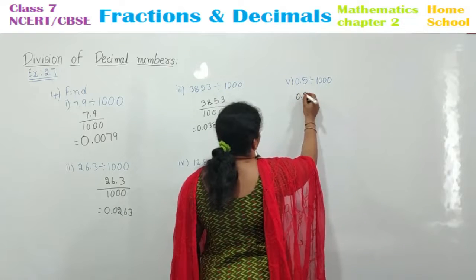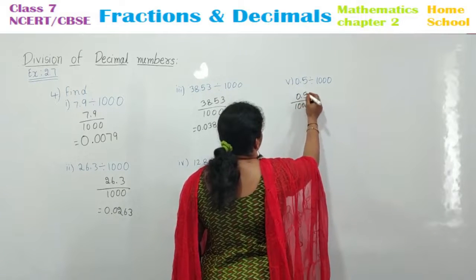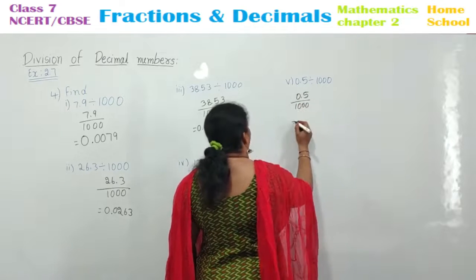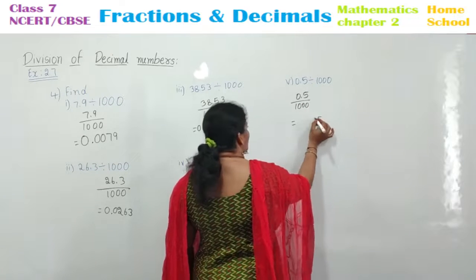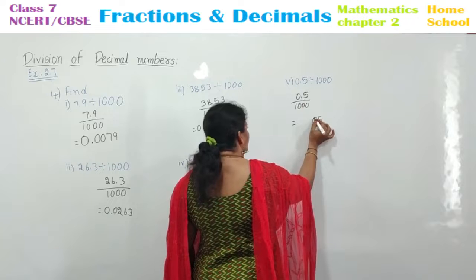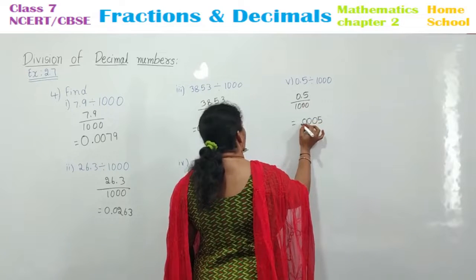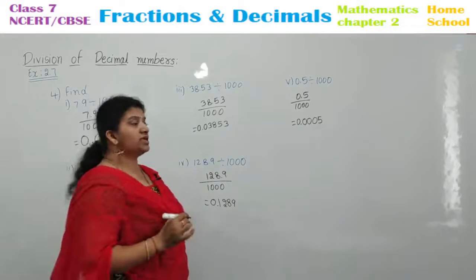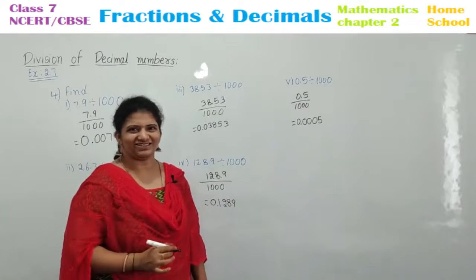And the fifth one: 0.5 divided by 1000. Write the answer here — write 5. Now start counting: 1, 2, 3. Put a point and then write. This is your answer: 0.0005.